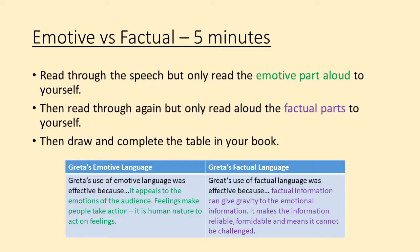Okay, so you should have got something like this. Greta's use of emotive language was effective because: it appeals to the emotions of the audience; feelings make people take action; it is human nature to act on feelings. Greta's use of factual language was effective because: factual information can give gravity to the emotional information; it makes the information reliable, formidable, and means it cannot be challenged. If you didn't get anything down or you're not convinced what you wrote was correct, please could you correct it now or write something similar to what's on the slide.